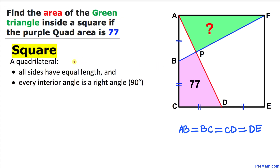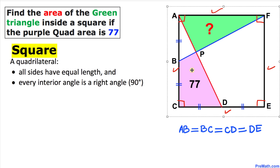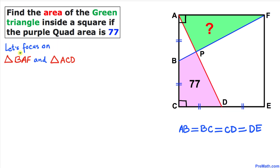Here's the definition of a square: all sides have equal lengths and every interior angle is a right angle, that means 90 degrees. So all these sides have equal lengths and moreover these angles are right angles, that means 90 degrees. Now let's focus on these two triangles: triangle BAF and triangle ACD.